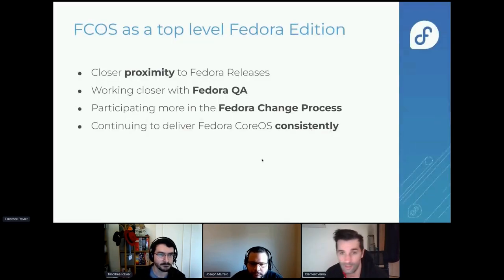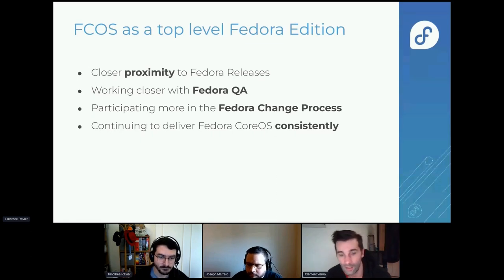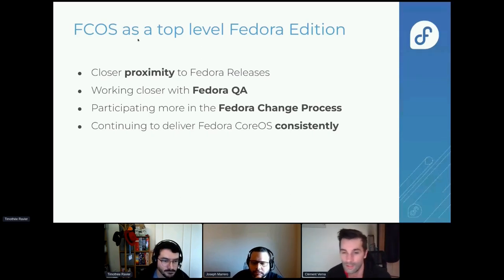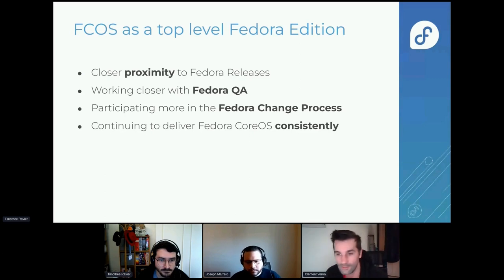Quite a few things have happened. In Fedora 37 we're becoming a top-level edition, which was a good process to go through — we got to work more closely with the Fedora QA team and be part of the go/no-go release process, with release criteria we can verify. We're also participating more in the Fedora change process and becoming more aligned with the six-month release cadence of Fedora, while continuing to release Fedora CoreOS every couple of weeks.